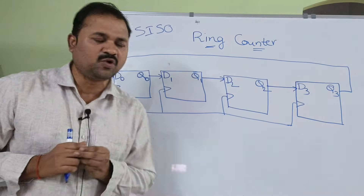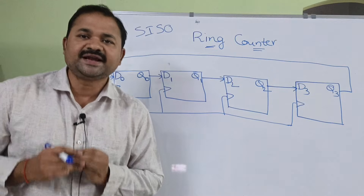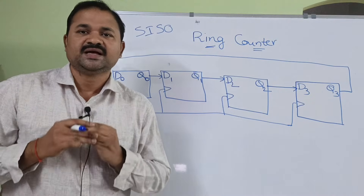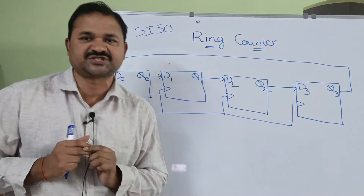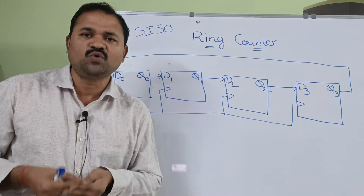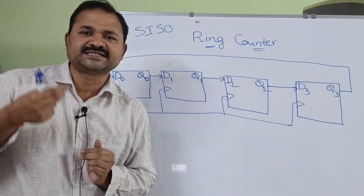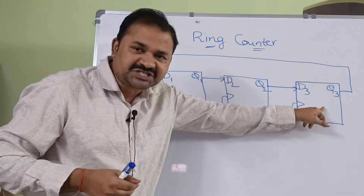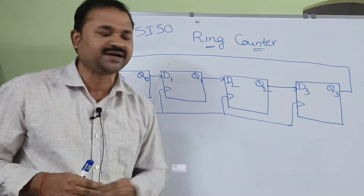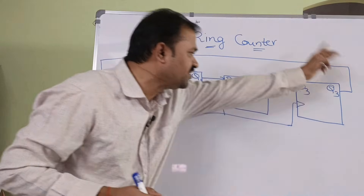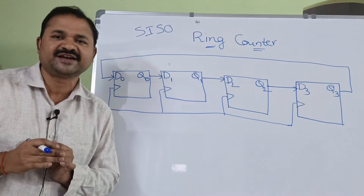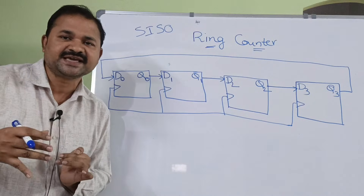A ring counter is just like a SISO shift register except for one difference. In a SISO shift register, the last flip-flop produces a serial output. Whereas in a ring counter, the output of the last flip-flop is connected back as input to the first flip-flop. That is the only difference between a ring counter and a SISO shift register.